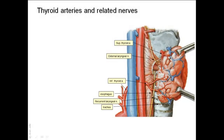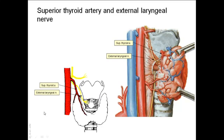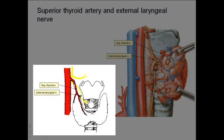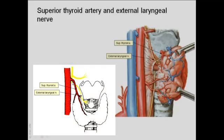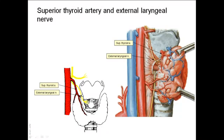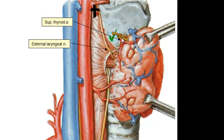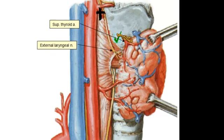These nerves may be injured during thyroidectomy, when the vessels supplying the thyroid gland must be ligated and divided. To avoid injury of the external laryngeal nerve, the superior thyroid artery is ligated and sectioned near the upper pole of the thyroid gland, where it is not so closely related to the external laryngeal nerve. It is recommended that the artery be ligated very close to the upper pole to avoid this nerve injury.